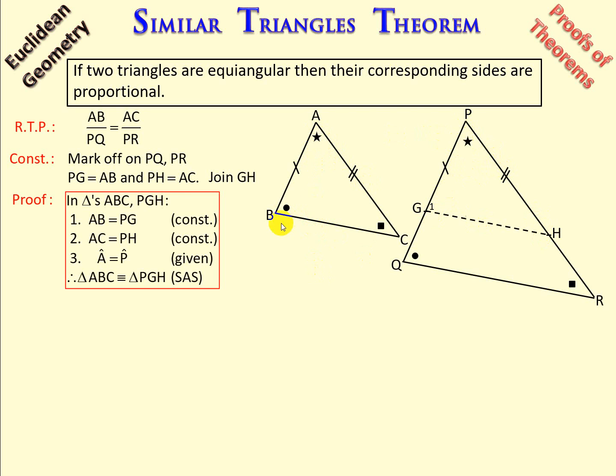That was given, and we also have AB equal to PG, and AC equal to PH, that is from the construction.